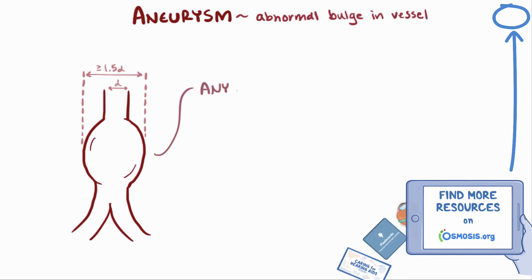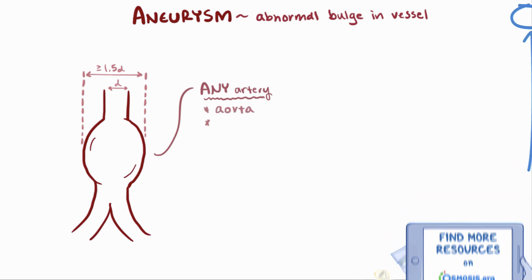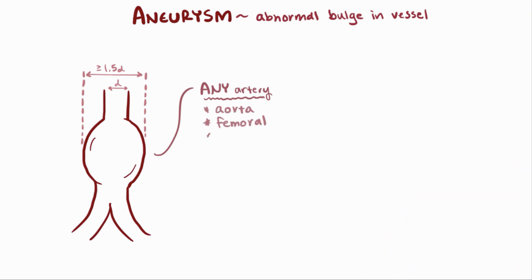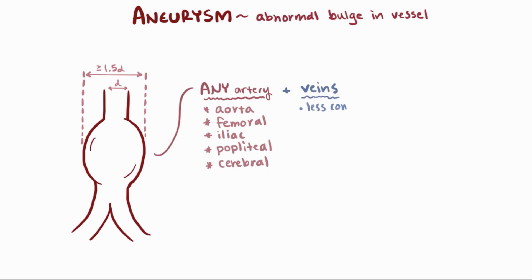Aneurysms can happen to any blood vessel in your body, like the aorta, the femoral artery, the iliac artery, the popliteal artery, and the cerebral arteries. They can also happen in your veins too, but those are less common because blood pressure in veins is much, much lower than in arteries.